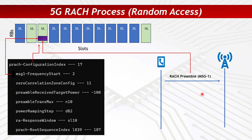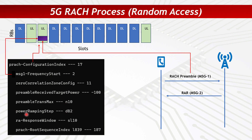Once the UE has sent Message 1, it waits for the Random Access Response, which is Message 2. The duration of this wait is given by the RA response window parameter. If it says 10 slots, the UE waits up to 10 slots for a response. If no response is received within that window, the UE retransmits the RACH preamble, and on each retransmission it increases its transmit power by 2 dB, as defined by the power ramping step parameter.